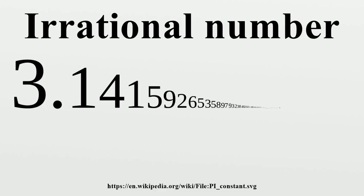Numbers which are irrational include the ratio pi of a circle's circumference to its diameter, Euler's number e, the golden ratio phi, and the square root of two. In fact all square roots of natural numbers, other than of perfect squares, are irrational.